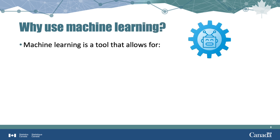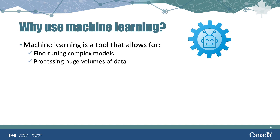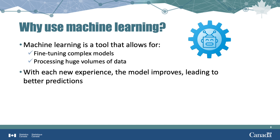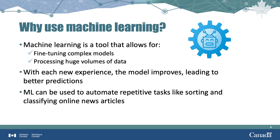Machine learning is a tool that allows for the development, adjustment, and fine-tuning of complex models in order to make more accurate predictions using high volumes of data. Think of it like a human brain — as it receives more data, the model improves and can draw better conclusions leading to stronger predictions. Machine learning is also used to automate repetitive and tedious tasks that would otherwise take many hours to complete, such as sorting and categorizing online news articles.